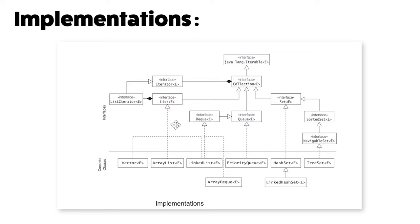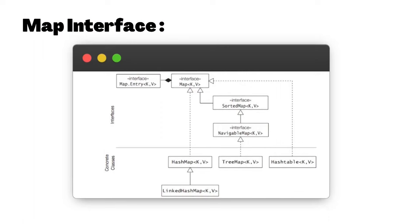Looking at the concrete implementations: Vector and ArrayList implement List; LinkedList implements both Deque and List; PriorityQueue implements Queue; HashSet implements Set; LinkedHashSet extends HashSet; TreeSet implements NavigableSet; ArrayDeque implements Deque. For Map: HashMap implements Map, TreeMap implements NavigableMap, and LinkedHashMap extends HashMap. We'll see all of these in action later.